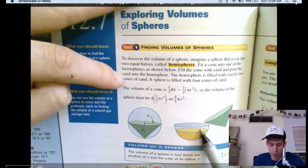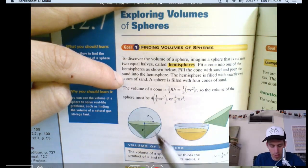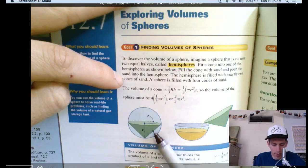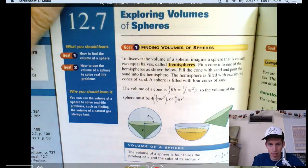So a hemisphere is two cones. And a full sphere, because that's two hemispheres, right, is four cones.